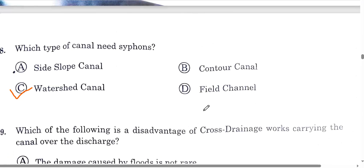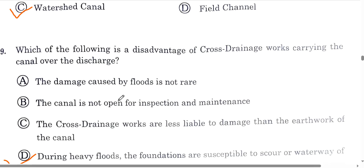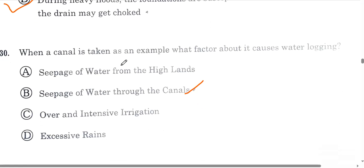Question number 28: which type of canal is a siphon type canal? Option C is the correct answer. Question number 29: which of the following is a disadvantage of cross-drainage work carrying the canal over the drain? The disadvantage is that during heavy floods, the foundations are susceptible to scour or the waterway of the drain may get soft. Option D is the correct answer.